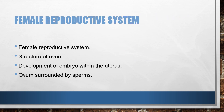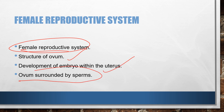For the female reproductive system, the first diagram is the female reproductive system itself. Next comes the structure of the ovum, then the development of the embryo within the uterus. There is also a diagram where the ovum is surrounded by millions of sperms — that diagram is very important with labeling — and the development of the human embryo within the uterus.